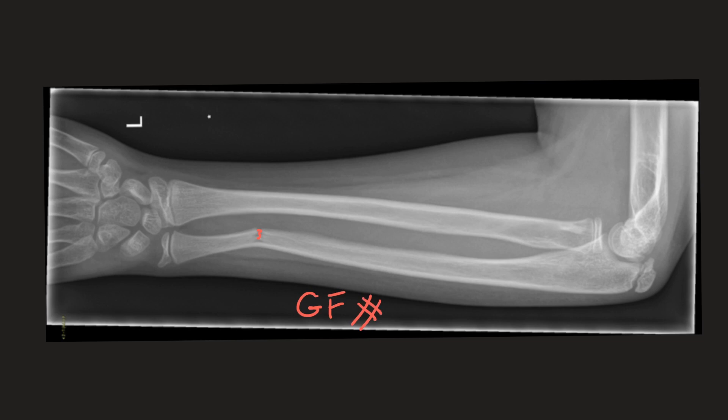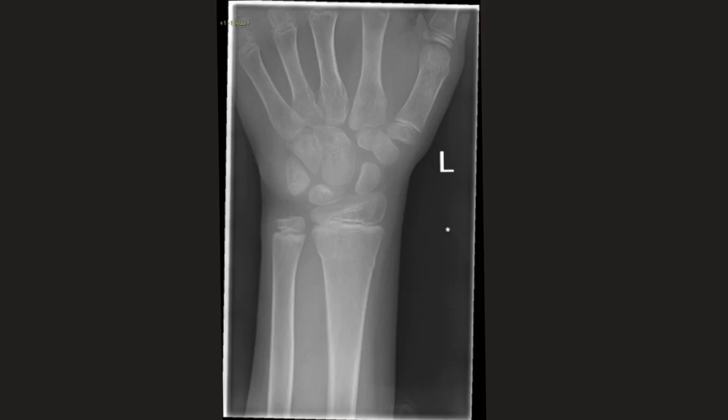In the second case, on this wrist x-ray, you can see that the distal radius looks abnormal. There are subtle irregularities in the cortex, and this is due to an axial loading injury, in keeping with a torus or buccal fracture.